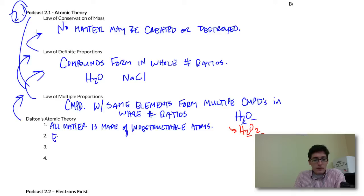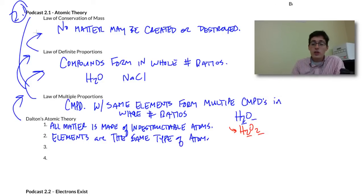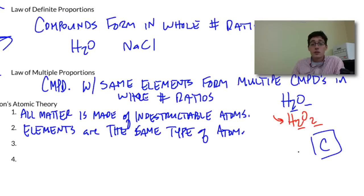The second one is that elements, like elements on the periodic table, are the same type of atom. So we don't have any mixtures. So a collection of sodium, all of those atoms are going to be exactly the same. A collection of carbon, the letter C, all of those atoms are going to be identical to one another.